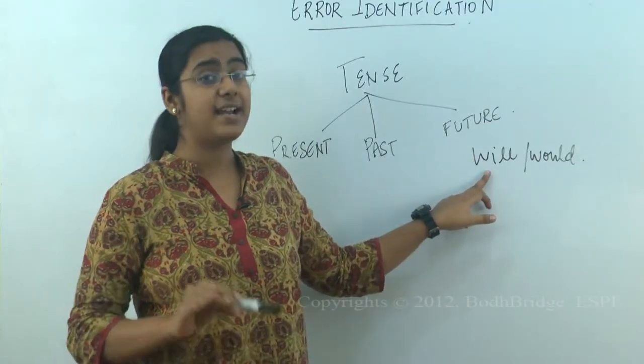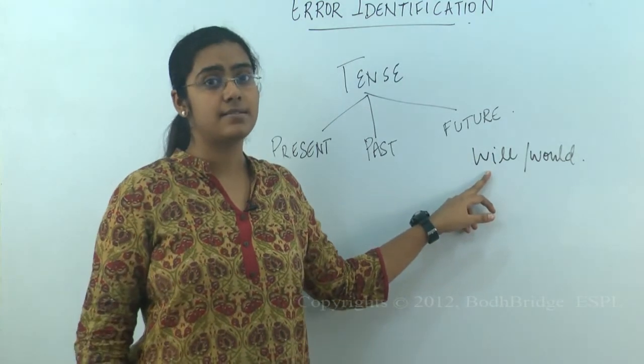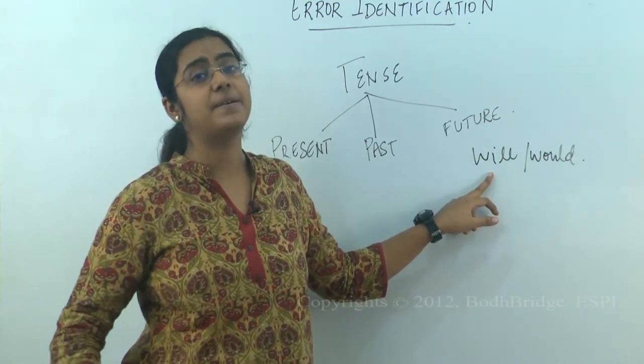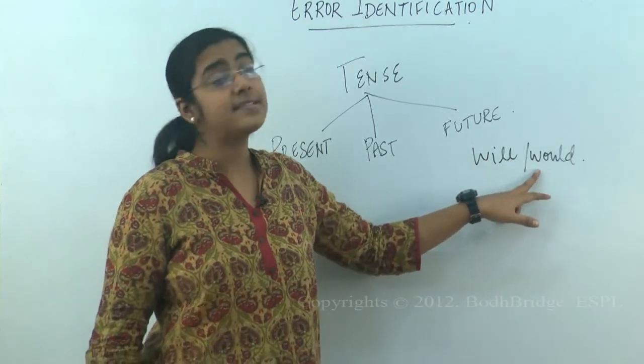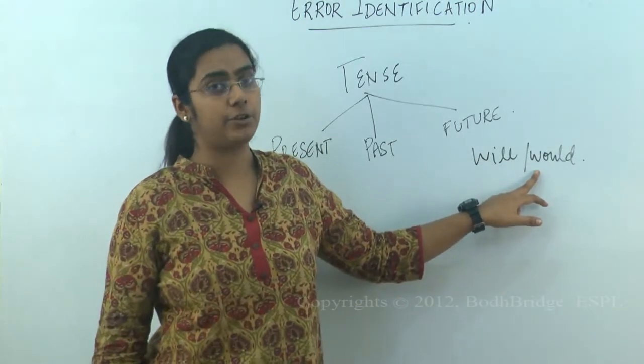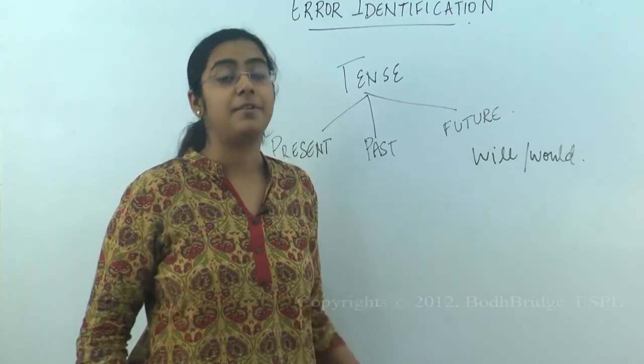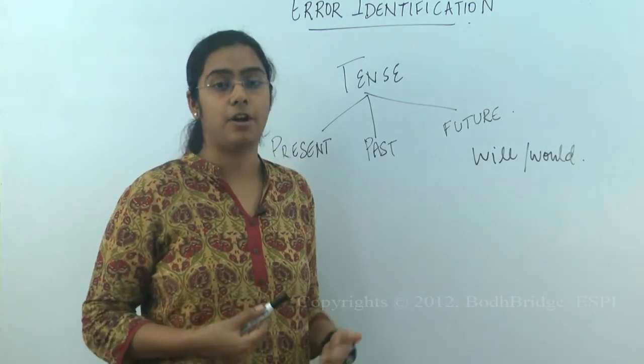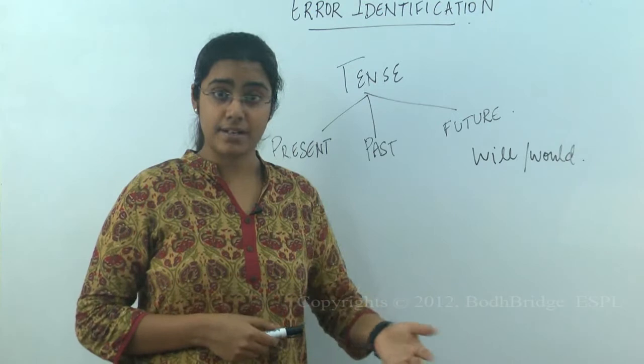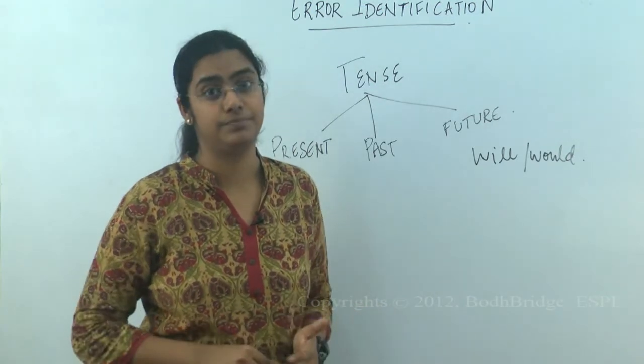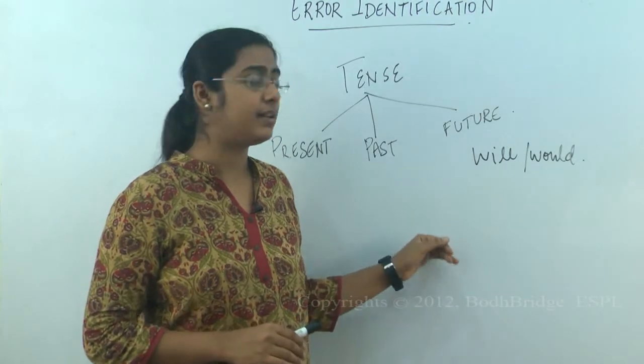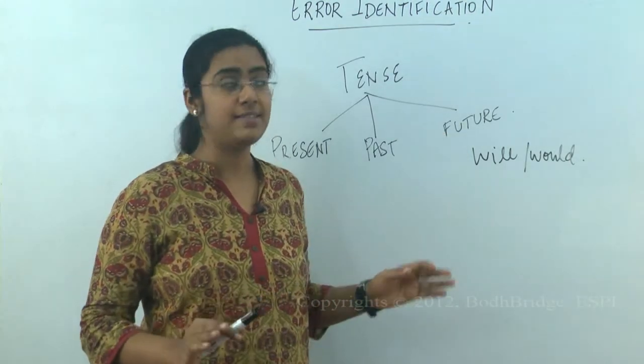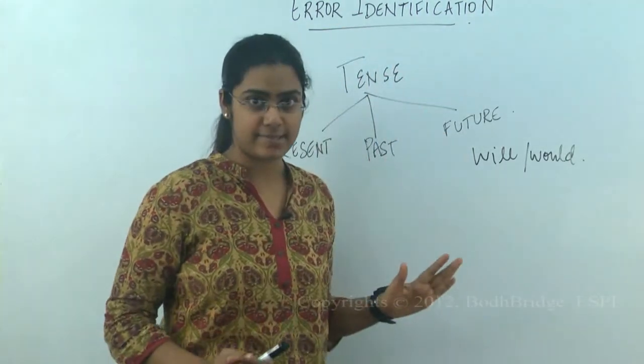Remember, if I say I will come to class, it's certainty. 100% probability. It's definitely going to happen. If I say I would be coming to class tomorrow, it means that it is only probability. I might turn up for class. I might not. This is what you need to keep in mind with respect to future tense in this exercise.